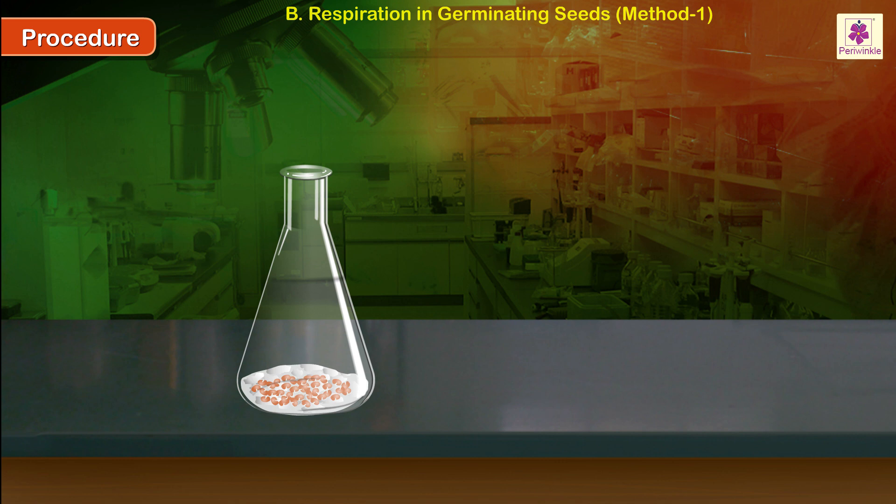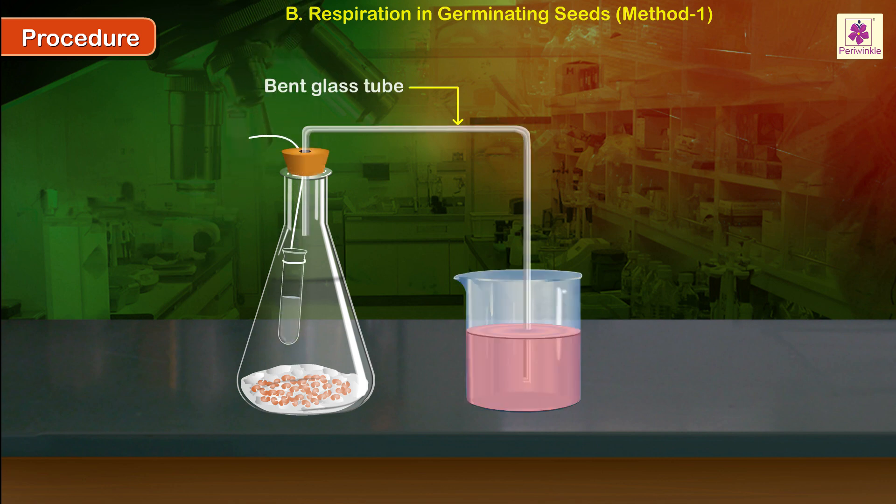Take germinating seeds in a conical flask. Take a narrow test tube and tie one end of a piece of thread at its mouth. Fill about half of the test tube with a concentrated solution of potassium hydroxide. Carefully suspend the test tube in the flask containing germinating seeds. A bent glass tube is passed through a one-hole rubber stopper.